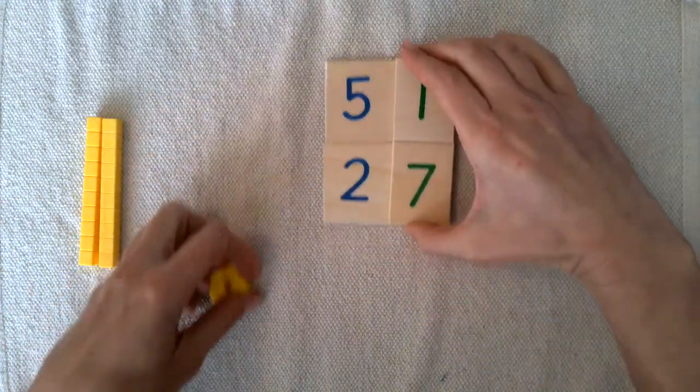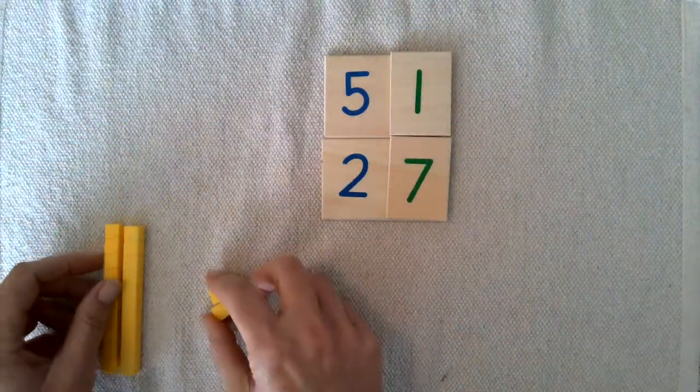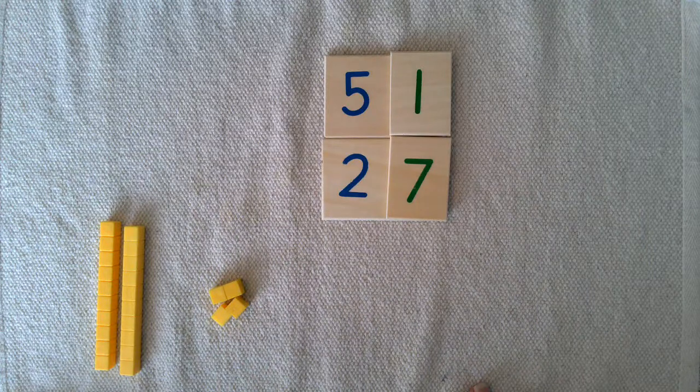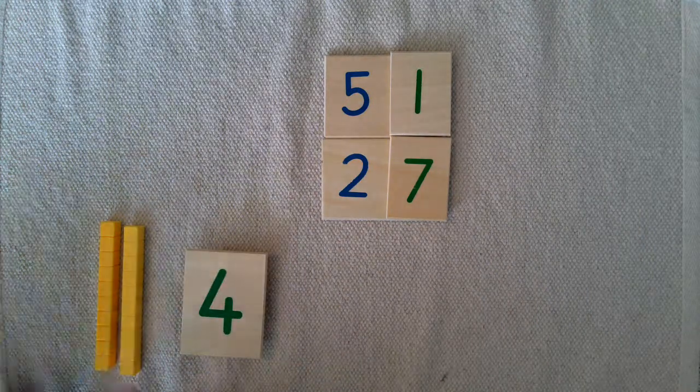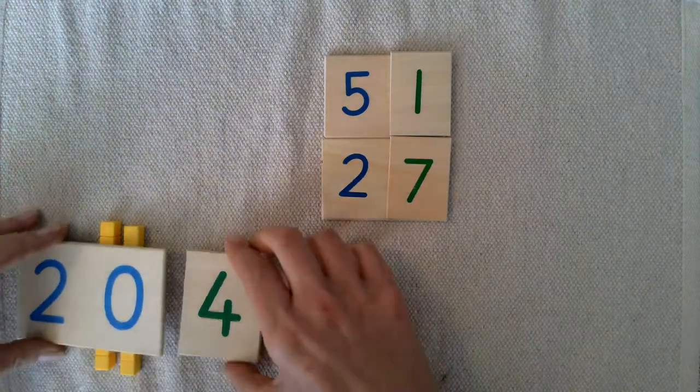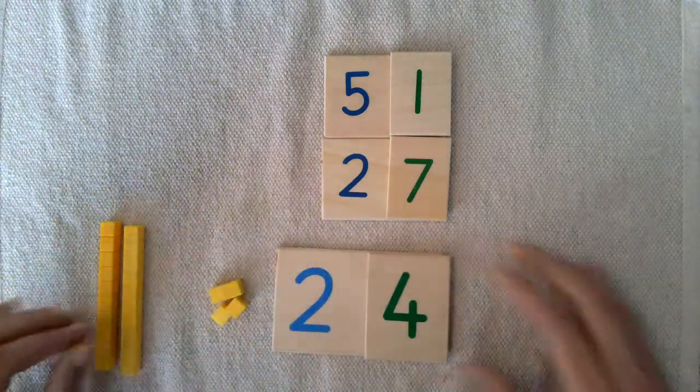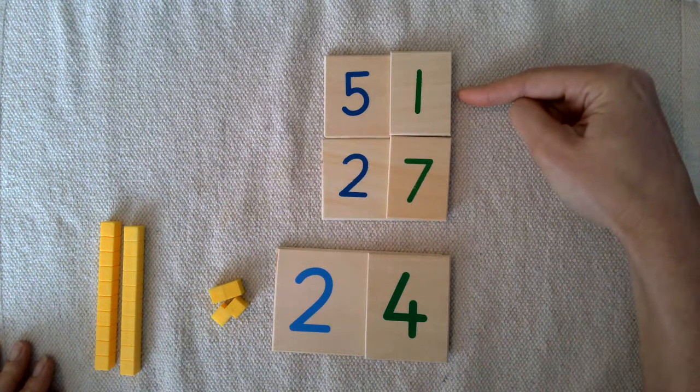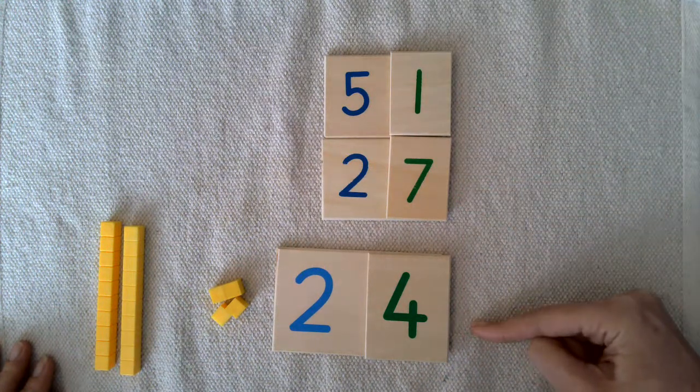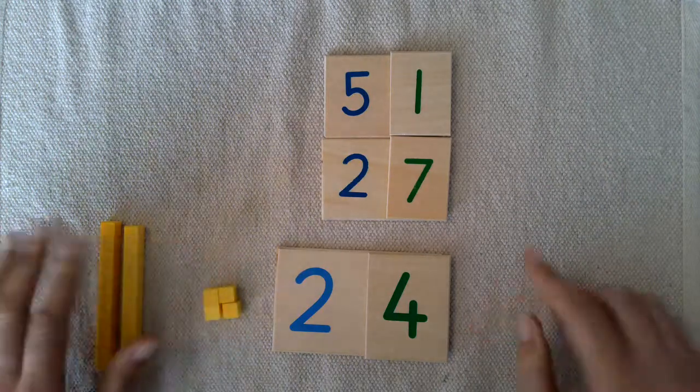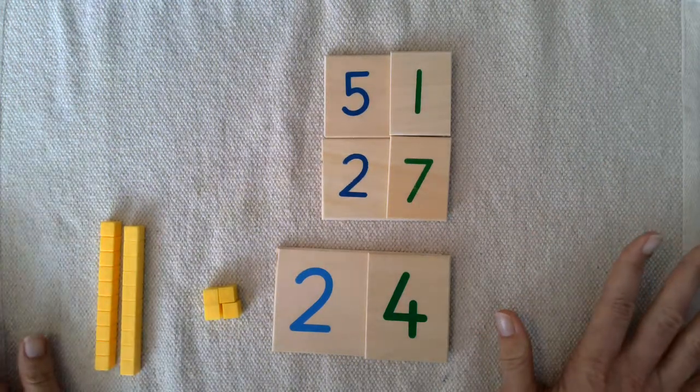Okay, so let's see how much we have left, what the difference is. We have four units and two tens, so 51 minus 27, the difference is 24.